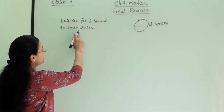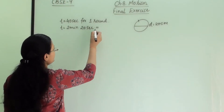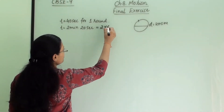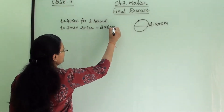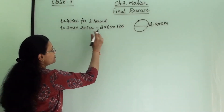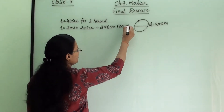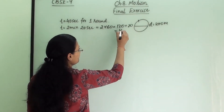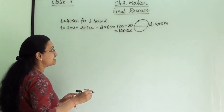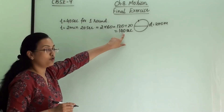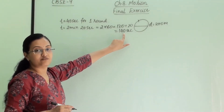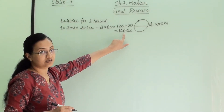First, let us convert the time into seconds. 2 minutes equals 120 seconds, and adding the extra 20 seconds gives us a total of 140 seconds. So we have to find distance and displacement for 140 seconds.